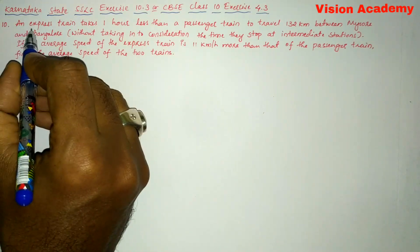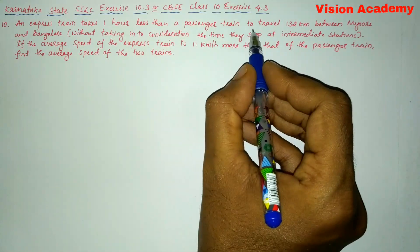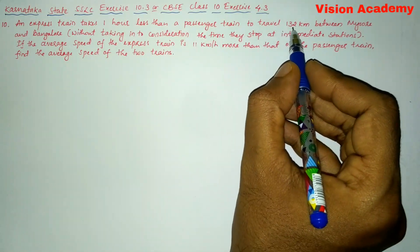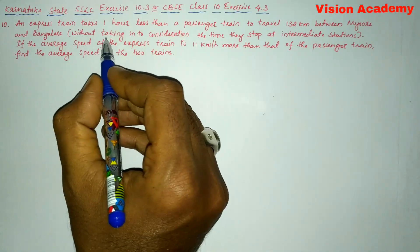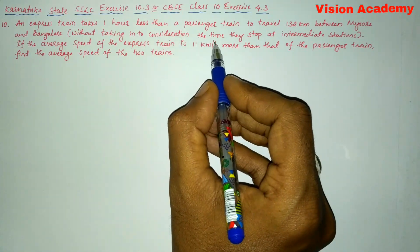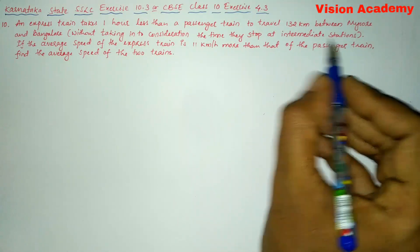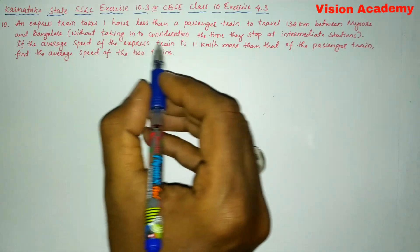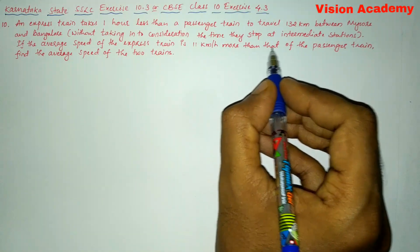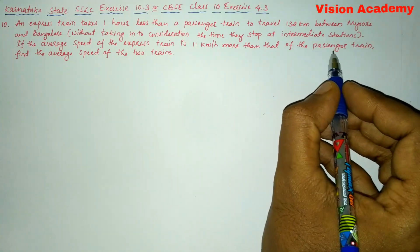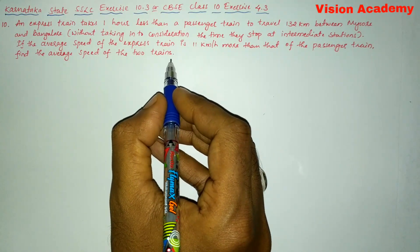Question number 10: An express train takes one hour less than a passenger train to travel 132 kilometers between Mysore and Bangalore, without taking into consideration the time they stop at intermediate stations. If the average speed of the express train is 11 kilometers per hour more than that of the passenger train, find the average speed of the two trains.